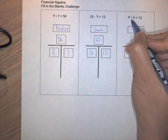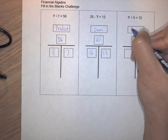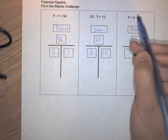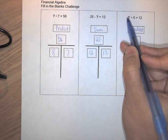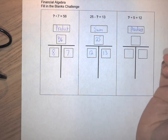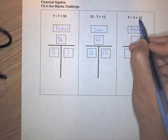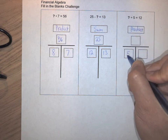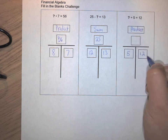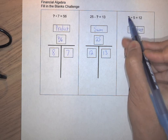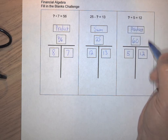The last one has a division symbol, which means we're looking at a product relationship. The question is: what, if I divide it into five equal groups, will give me 12 in each group? That means 5 and 12 are the factors, and 5 times 12 is 60. Now that I have the missing value, I can see that 60 divided by 5 is 12.